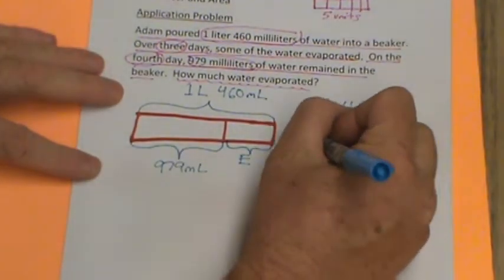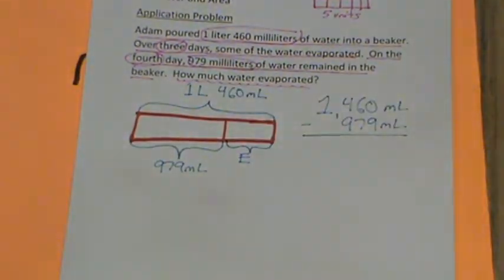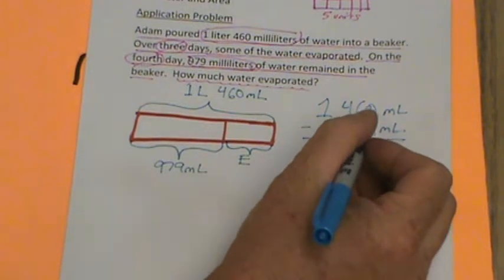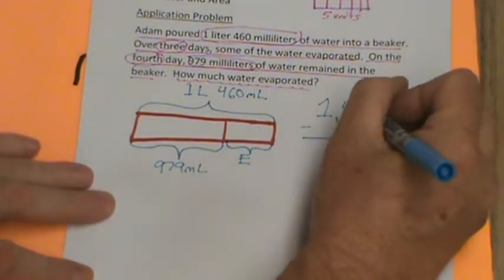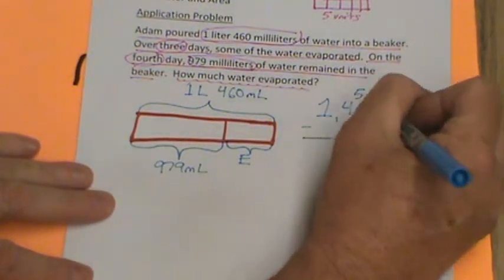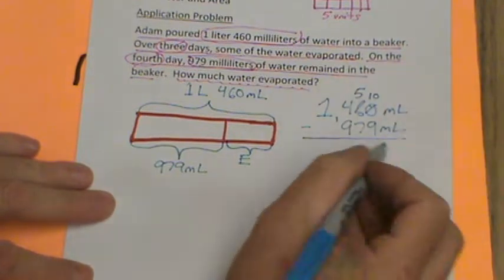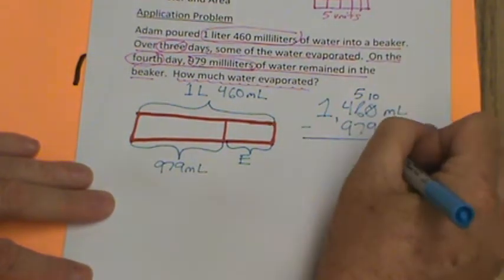So we're subtracting. There's our problem right there. I'm just going to double check the camera, make sure we're all in focus and in line. Yep, everything's looking good. So let's get busy subtracting. I know I can't take nine ones away from zero ones, so I'm going to decompose the tens. This will become a 5, and this will become a 10, right?